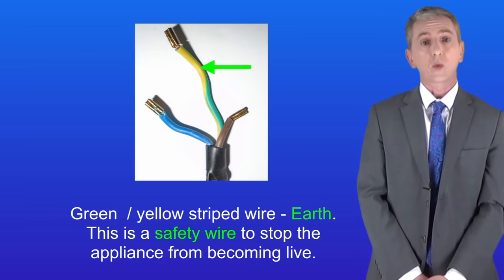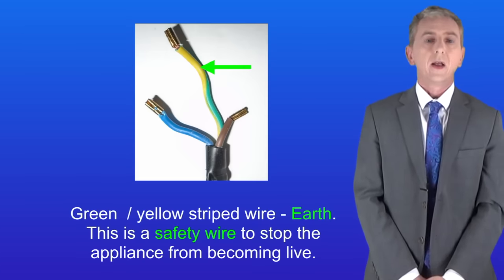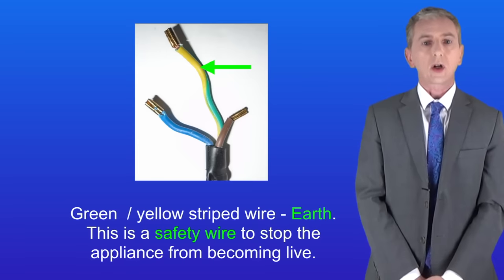Finally the green and yellow striped wire is called the earth wire. This is a safety wire and we're going to look at that in a minute.